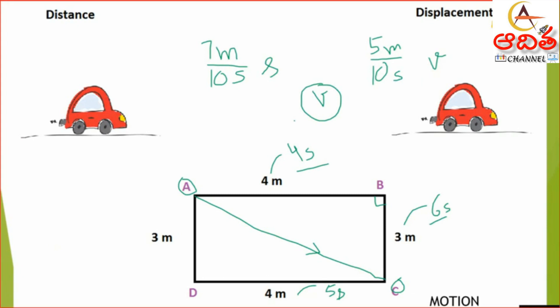For a long distance, the average speed or average velocity does not remain the same, so we use average speed and average velocity. You must have seen two meters on your vehicle — one is the odometer, which measures distance, and the other is the speedometer, which measures instantaneous speed. Instantaneous speed is the total distance covered in that very moment divided by the time taken.